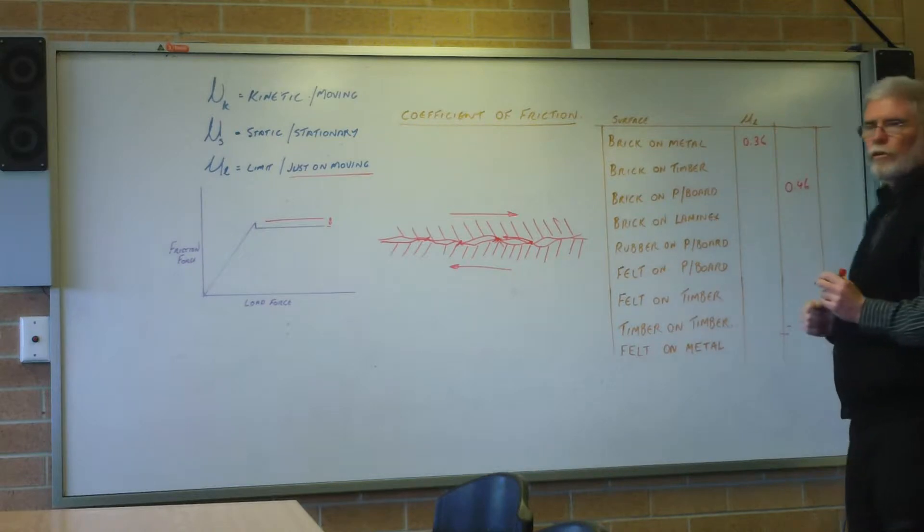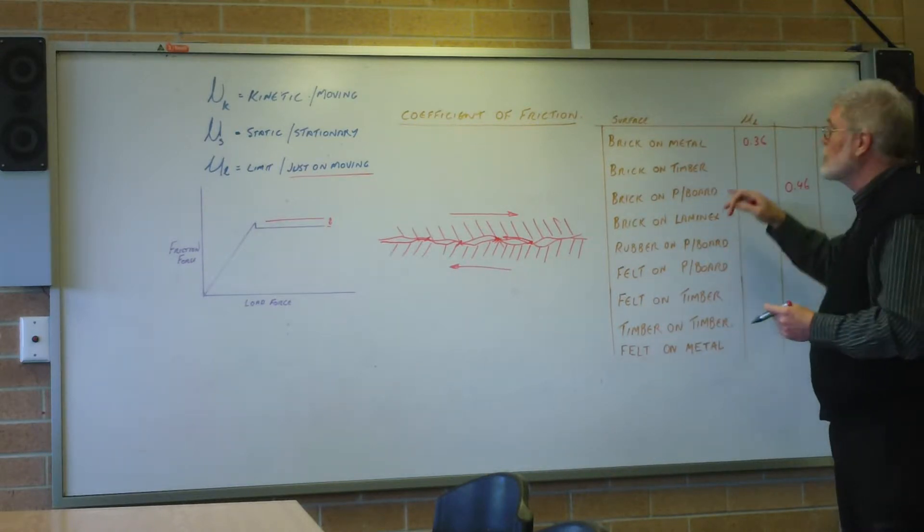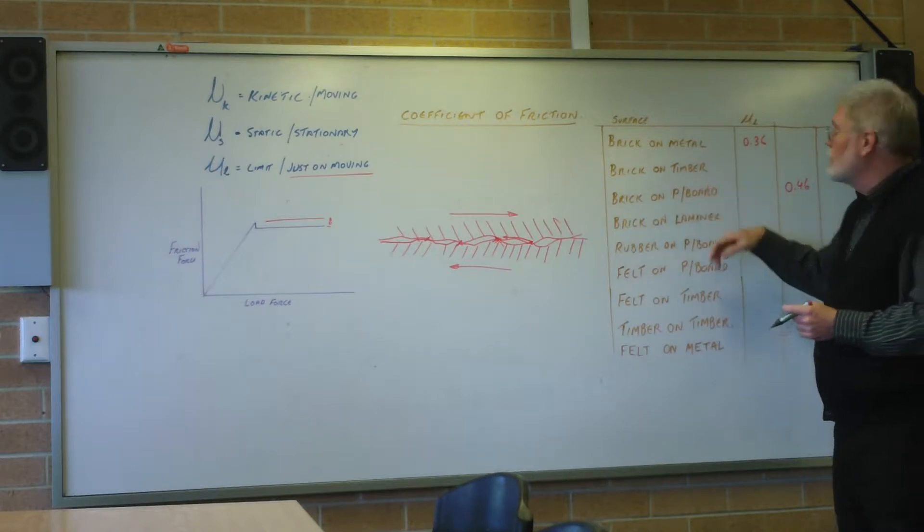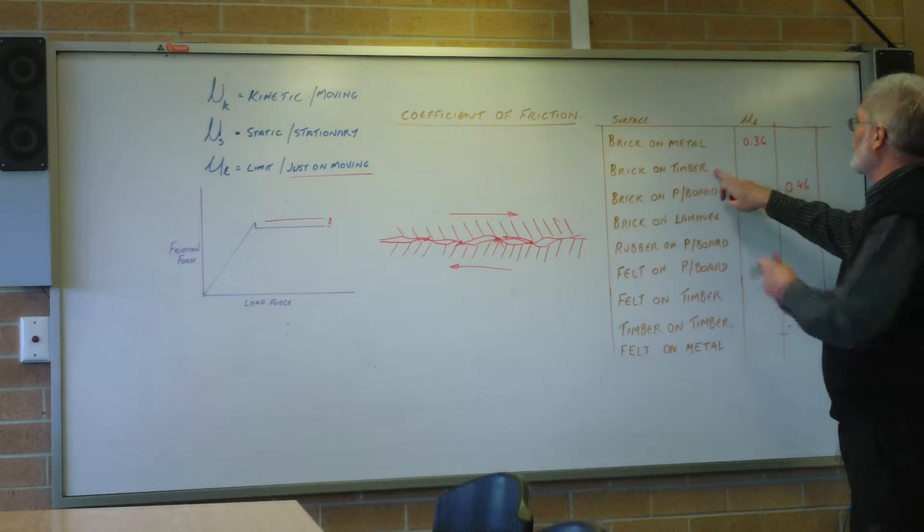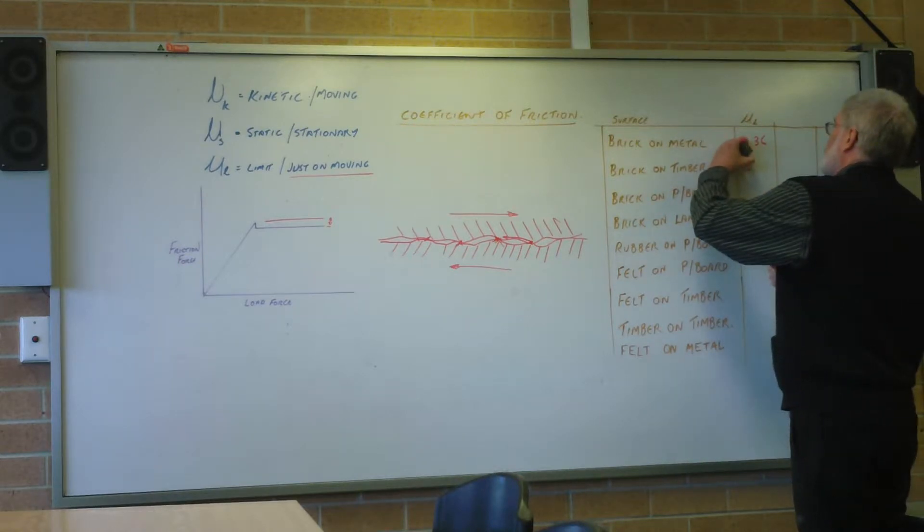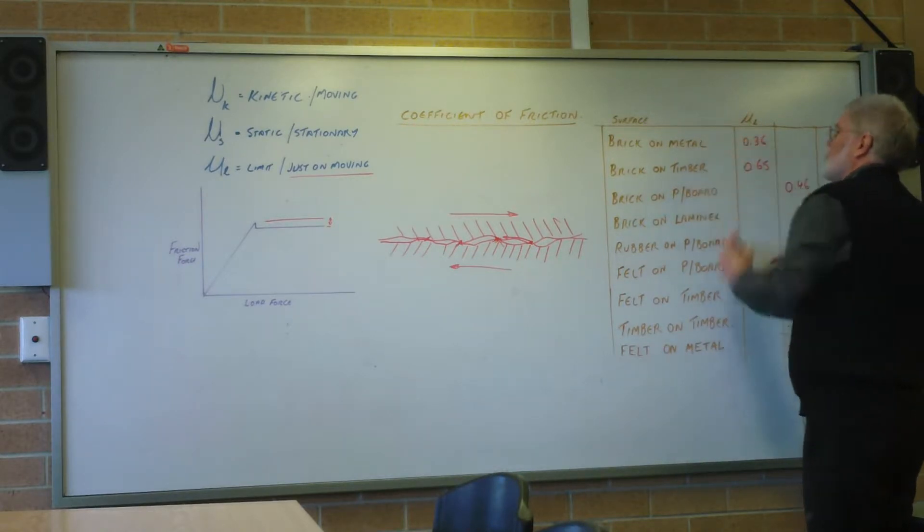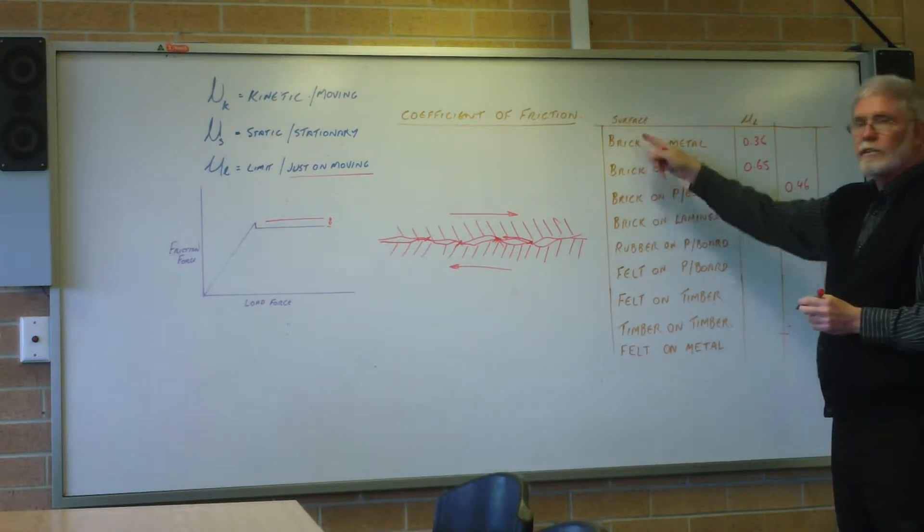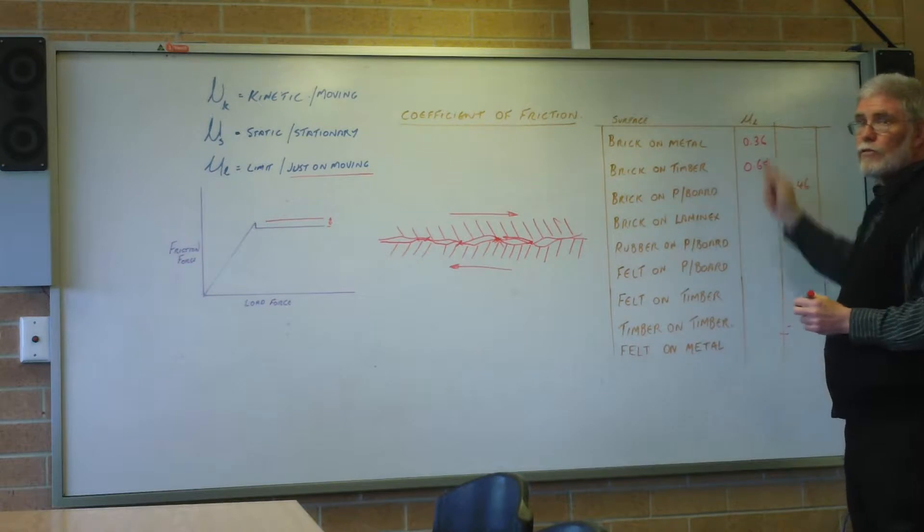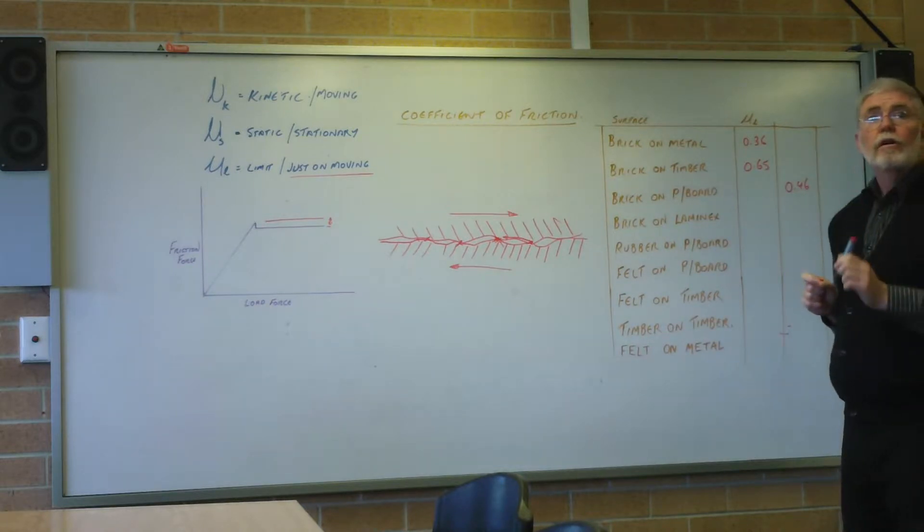Brick on timber, that one is 0.65. That's a big difference. Clearly the timber, being a much rougher surface than the metal, has more penetration going on because the brick hasn't changed but the surface values have changed greatly.